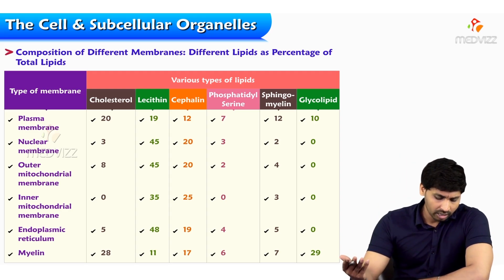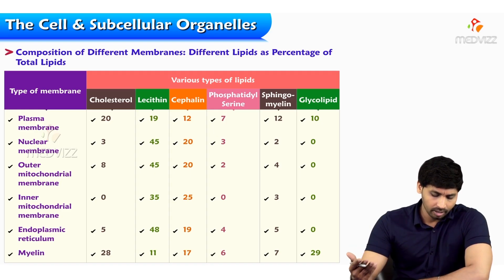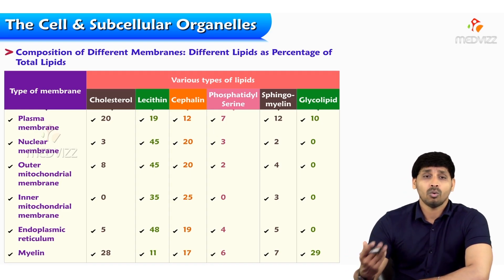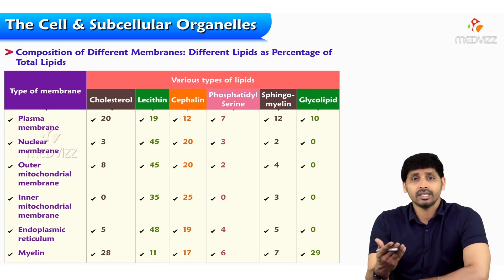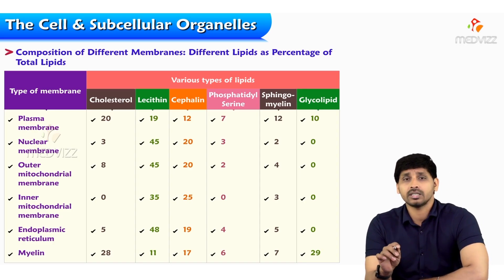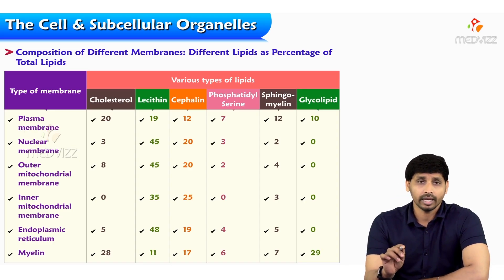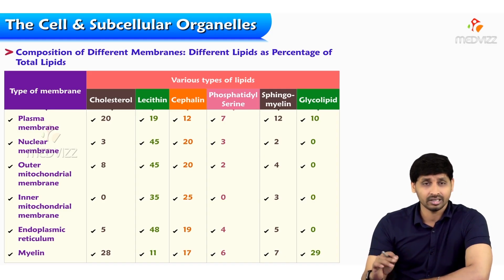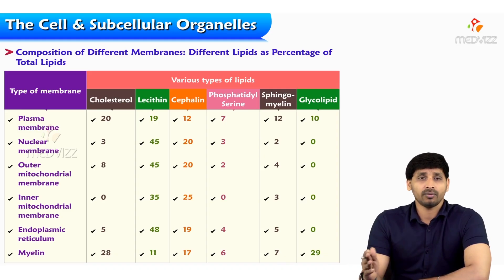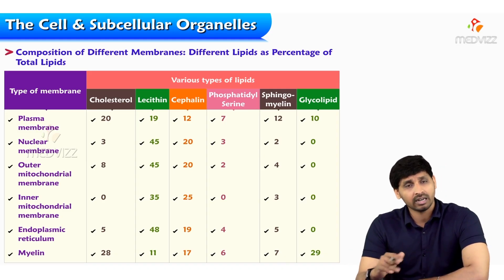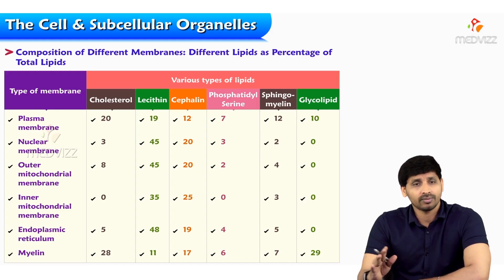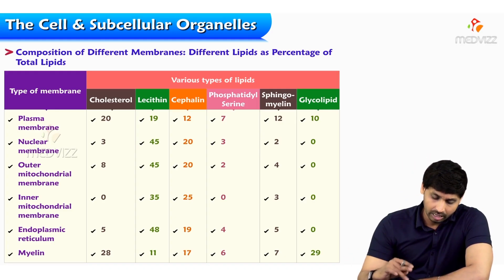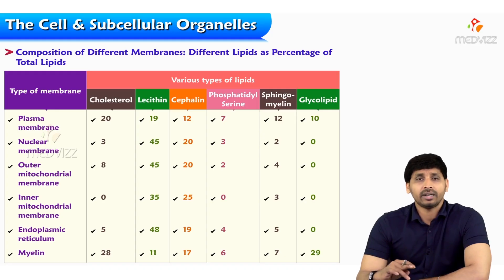The composition — including the amount of cholesterol and types of phospholipids like lecithin, cephalin, phosphatidylserine, sphingomyelin, and glycolipid — varies across different membranes: plasma membrane, nuclear membrane, outer and inner mitochondrial membranes, endoplasmic reticulum, and myelin sheath of the neuron. Subcellular organelles are also made up of membranes — the nucleus has the nuclear membrane, mitochondria has outer and inner membranes, and their lipid content and composition vary.